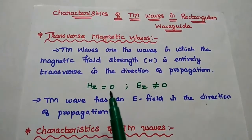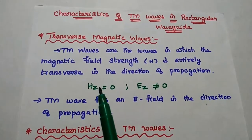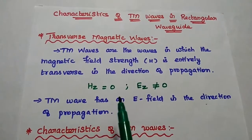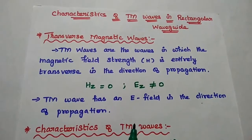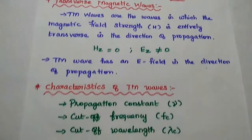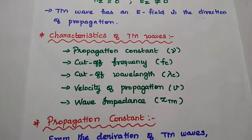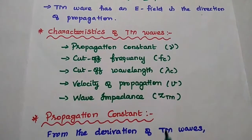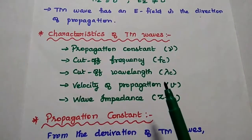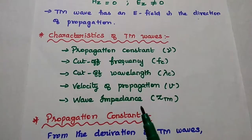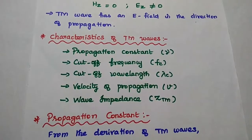The condition for transverse magnetic waves is: Hz is equal to zero and Ez is not equal to zero. Next we are going to derive the characteristics of TEM waves — propagation constant, cutoff frequency, cutoff wavelength, velocity of propagation, and wave impedance.